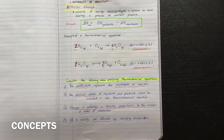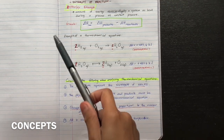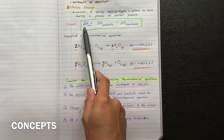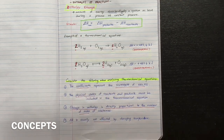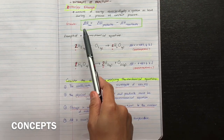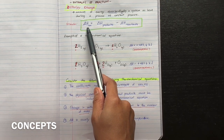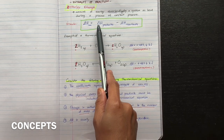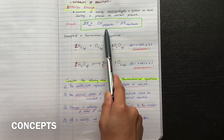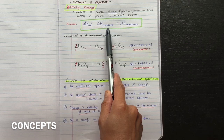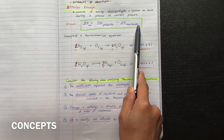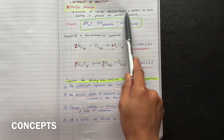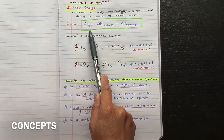The enthalpy change that accompanies a reaction is called either enthalpy of reaction or simply the heat of reaction. We usually represent that enthalpy of reaction as delta H. To solve for the change of enthalpy in a reaction (delta H rxn), it is always final minus initial. The final outcome of a chemical reaction is designated by the products, so delta H equals delta H of products minus delta H of reactants.